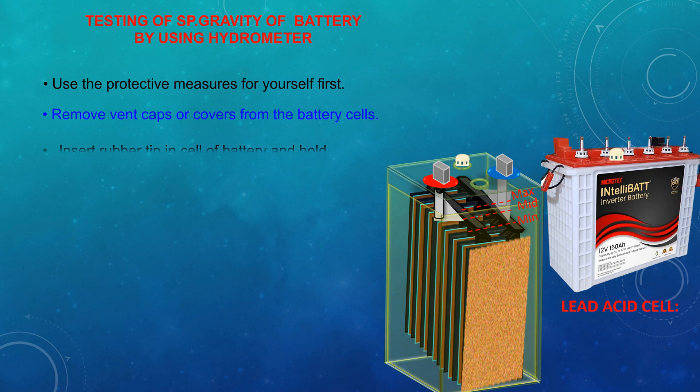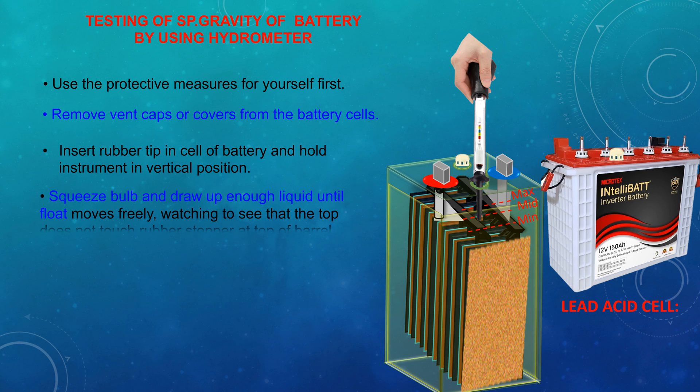Insert rubber tip in shell of battery and hold instrument in vertical position. Squeeze valve and drop enough liquid until the float moves freely, watching to see that the top does not touch rubber stopper at the top of the barrel.